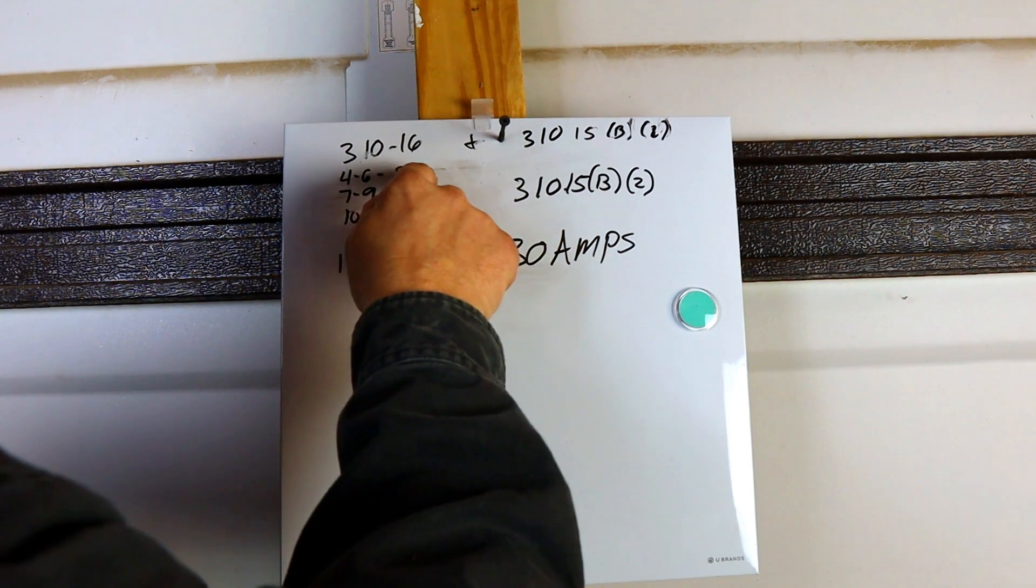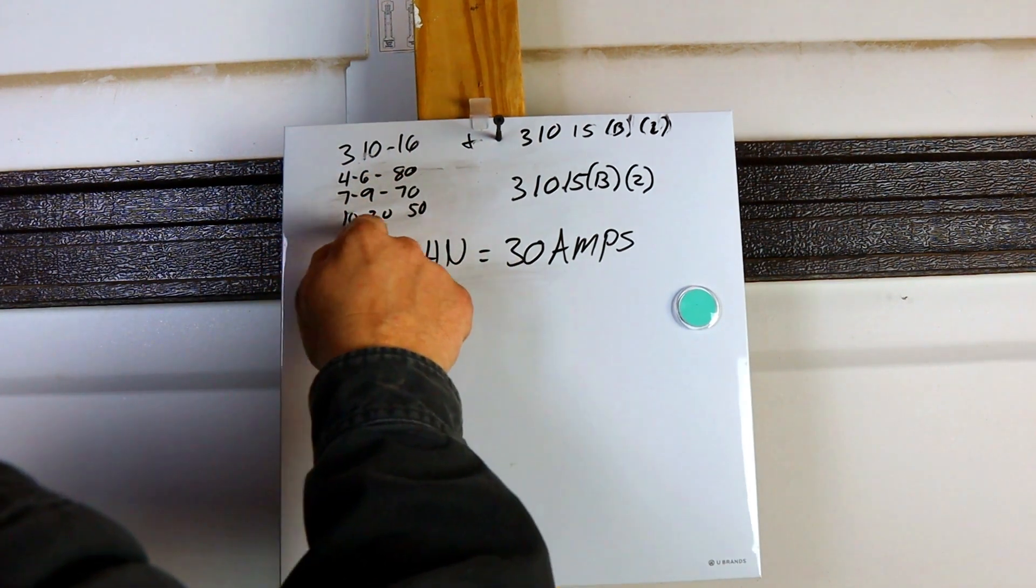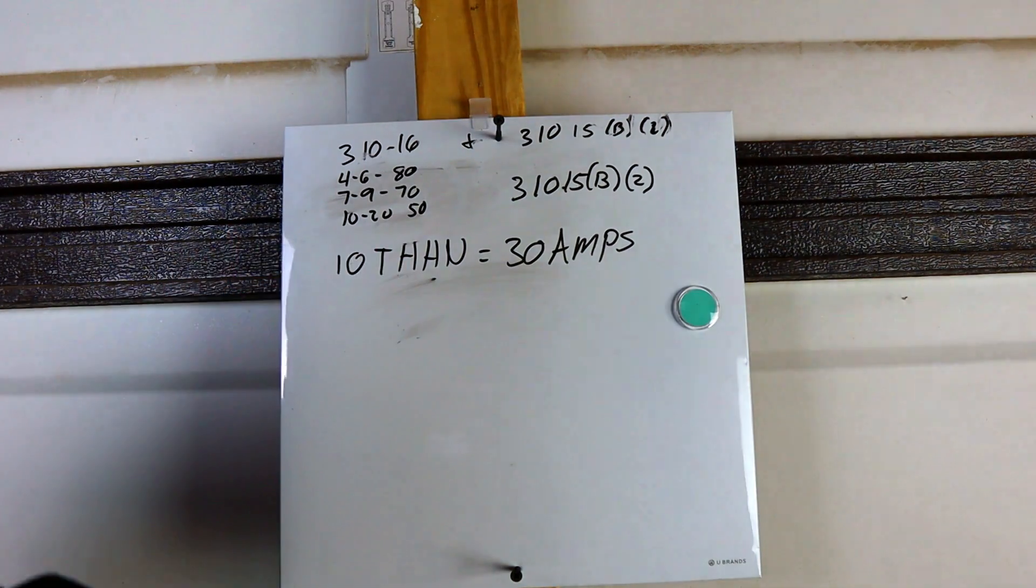This 310-16 is for the amps and the wire size. This 310-15(B)(2) tells you how many current carrying conductors you have to start de-rating for. So between 4 and 6, it has to be 80%. 7 and 9, 70%, 10 through 20, which is 50%. Now, what does all that mean?